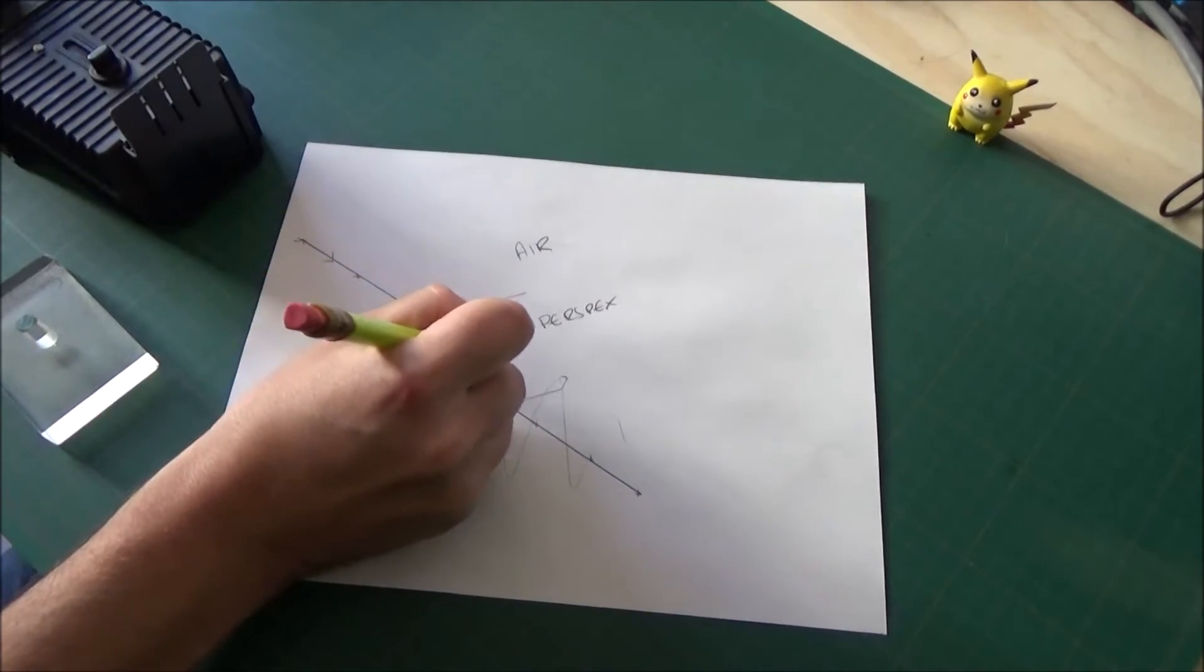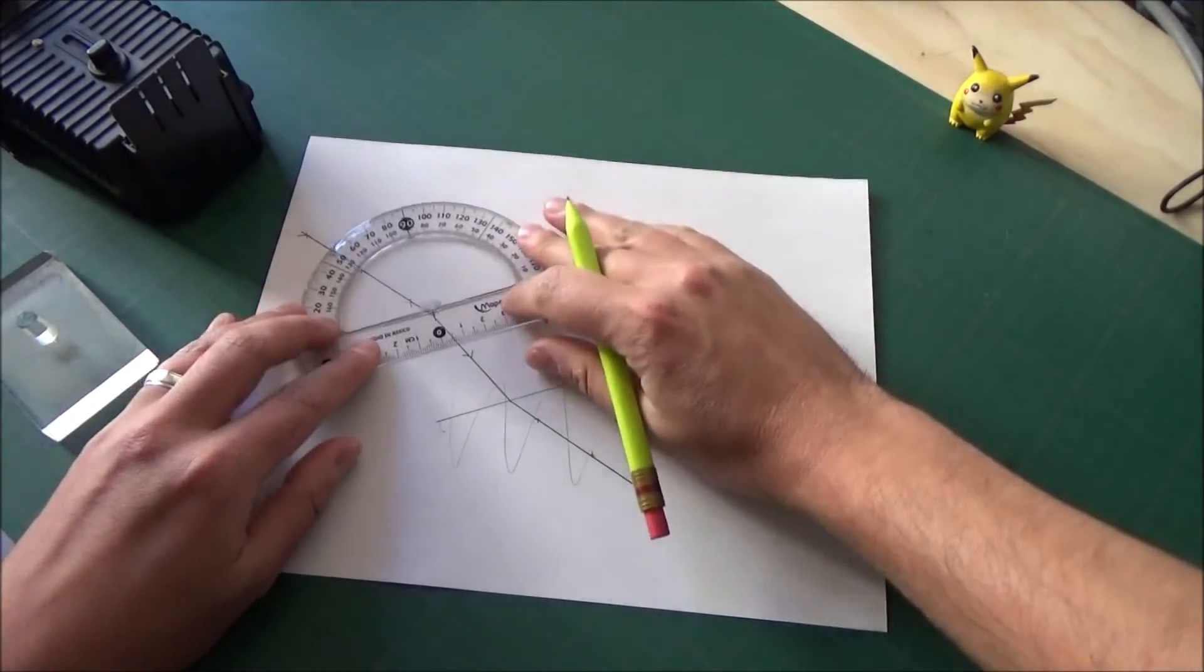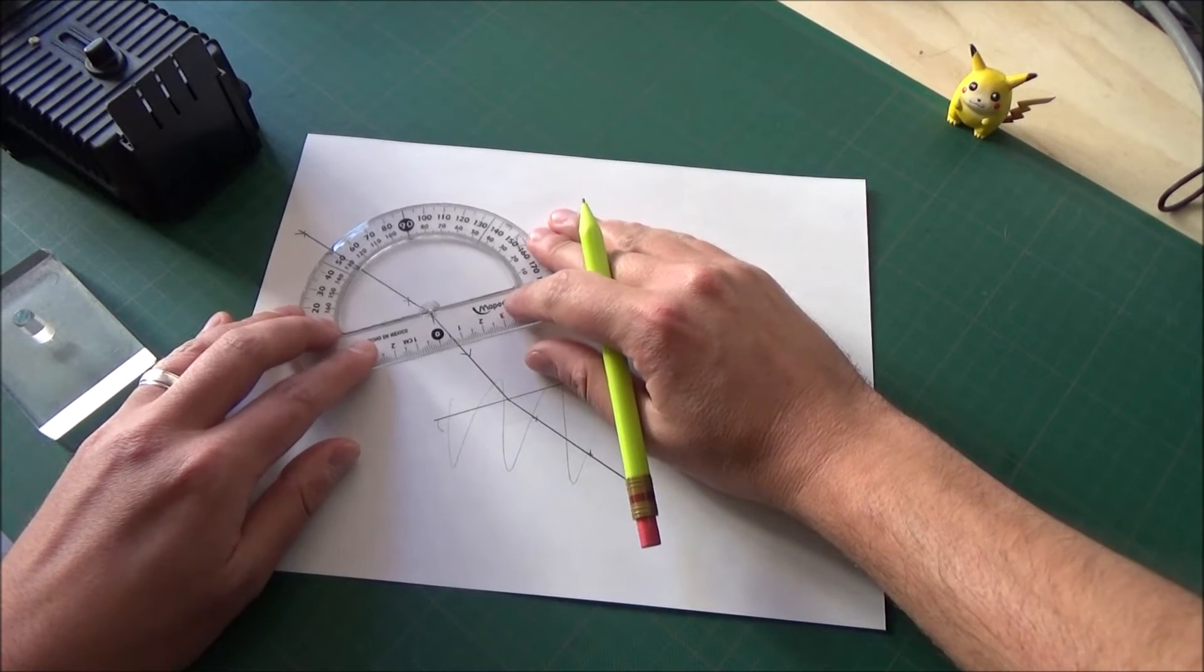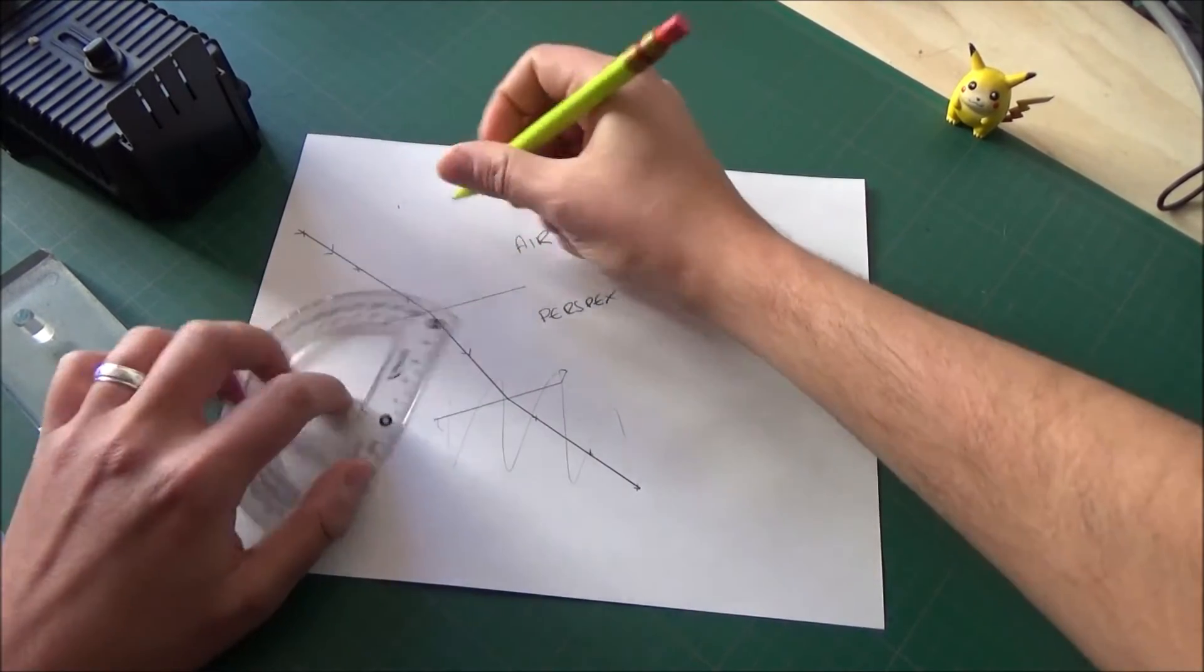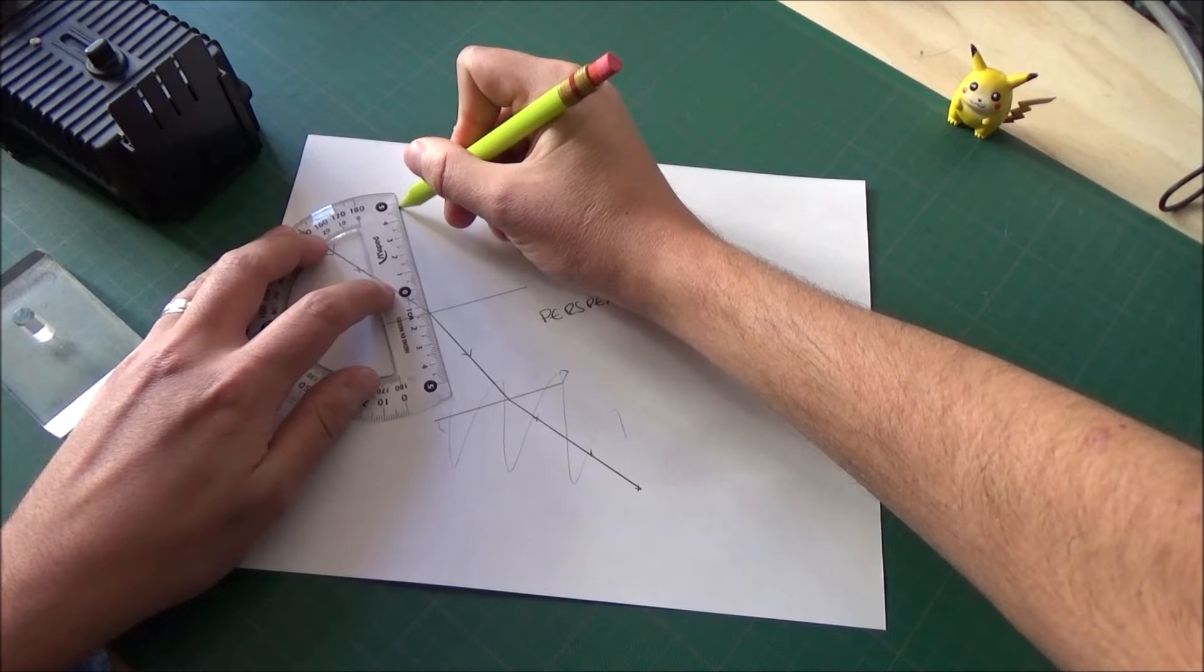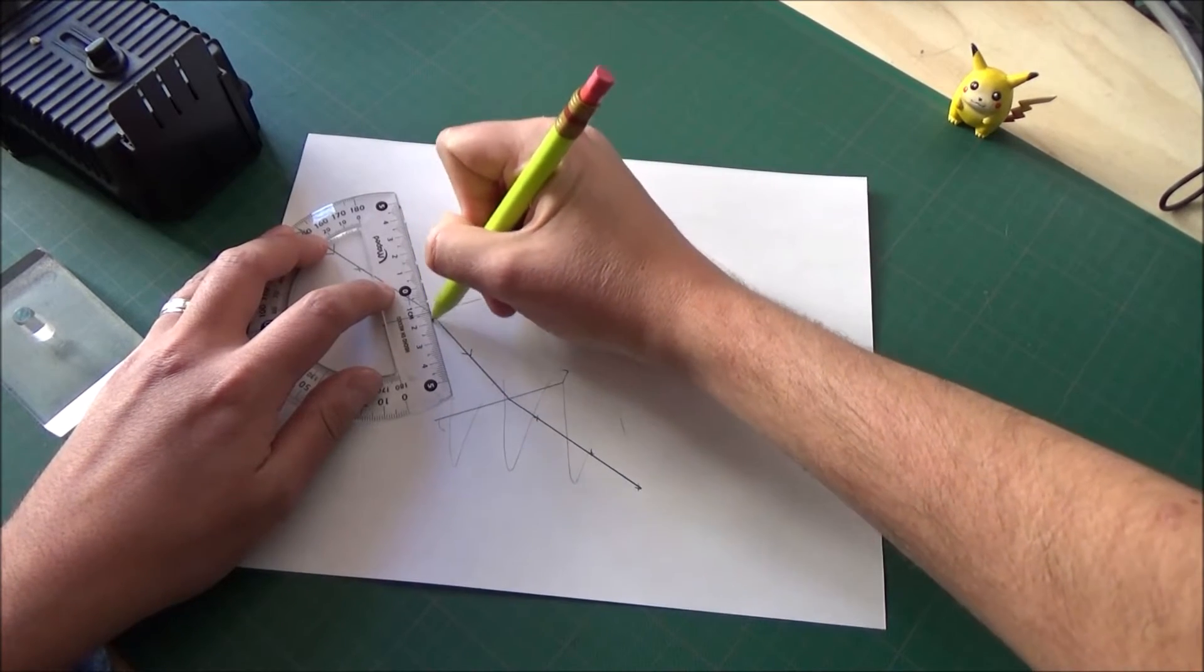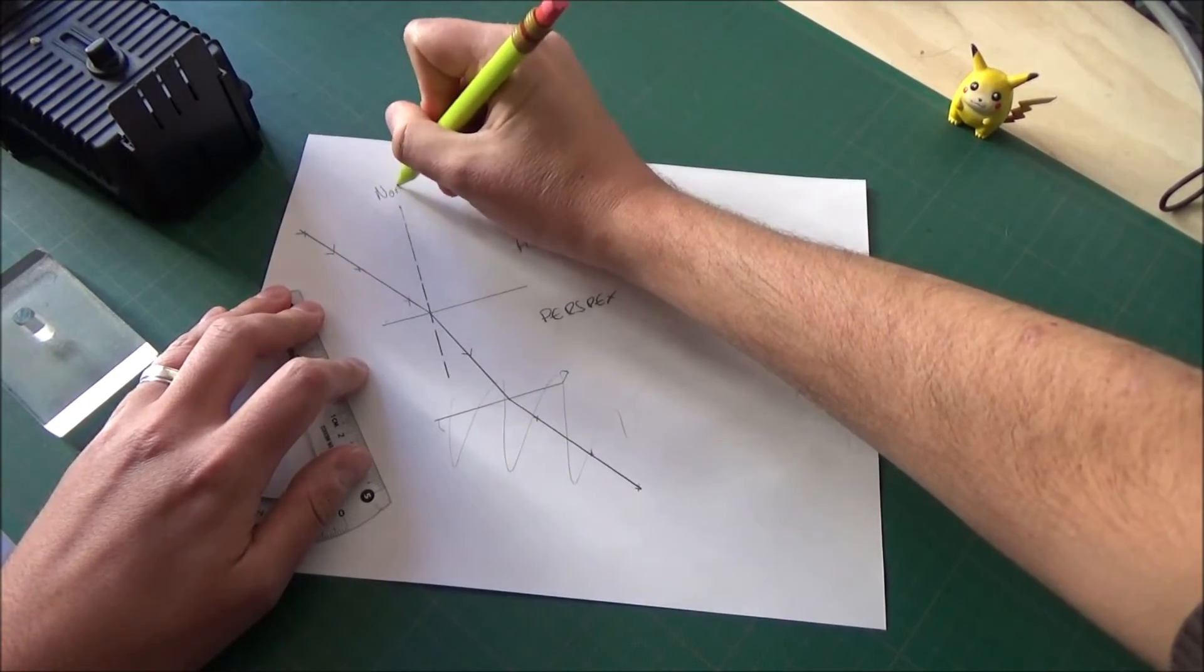Next, we're going to draw our normal. Line your protractor up right in the middle where the ray enters the perspex. Mark 90 degrees. You can mark another 90 degrees below. I'm just doing this for quickness. And we're going to draw our normal and extend it down into the perspex block.